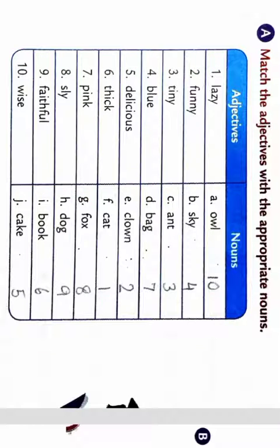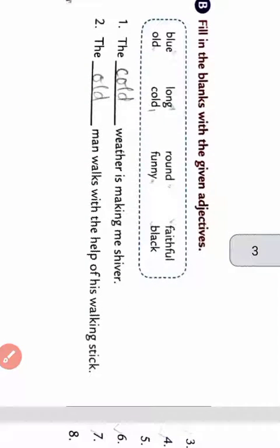Now next question, that is question number B. Let's read the question. Fill in the blanks with the given adjectives. So students, here you can see a box with some adjectives given. That is blue, long, round, faithful, old, cold, funny, black. So we have to put them in the fill in the blanks.